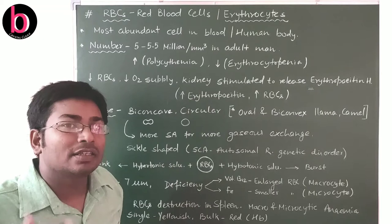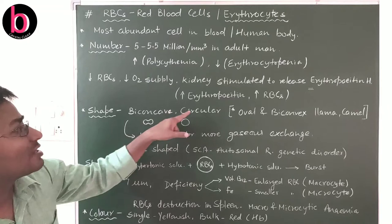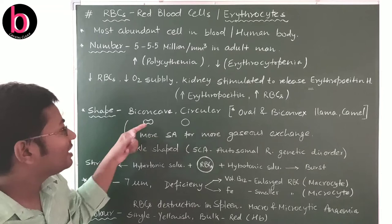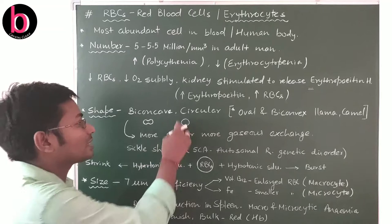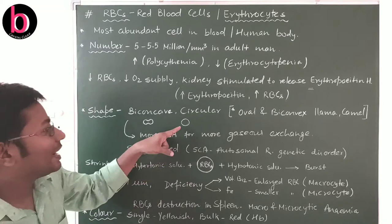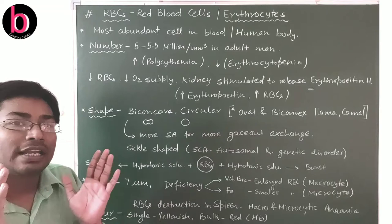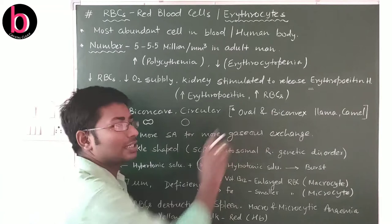Regarding shape, RBCs are normally biconcave and circular. The side view shows the biconcave shape, while the surface view shows a circular form. Biconcavity is very helpful because it increases the surface area compared to a simple circle, which contributes more to gaseous exchange during transport of oxygen and carbon dioxide.